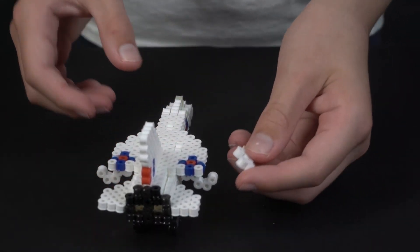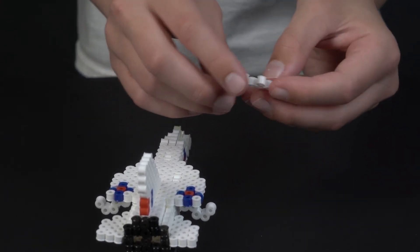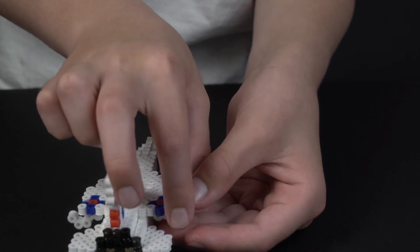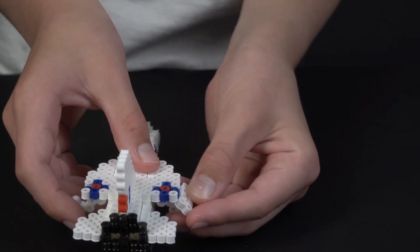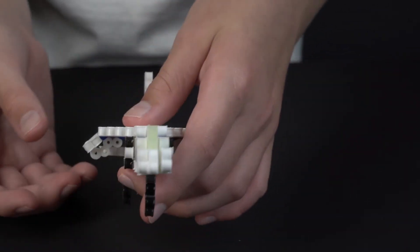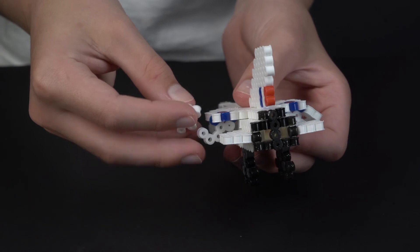Next we take this little piece and we pop it in so that it makes like a down-pointing wingtip. Then we do the exact same thing on the other side.